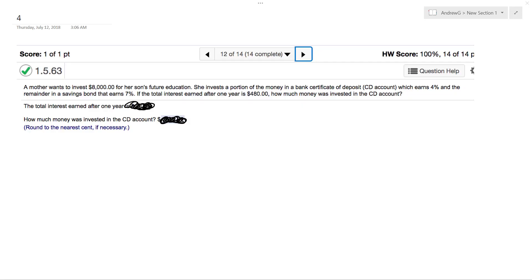Alright, so what we have here is a mother that wants to invest $8,000 for her son's future education. She invests a portion of the money in a bank certificate of deposit which earns 4%, and the remainder in a savings bond that earns 7%.